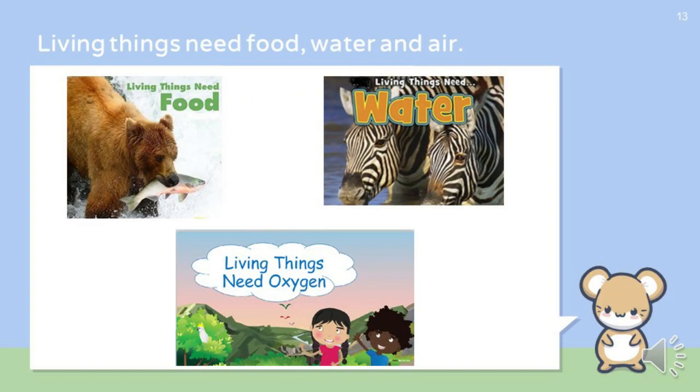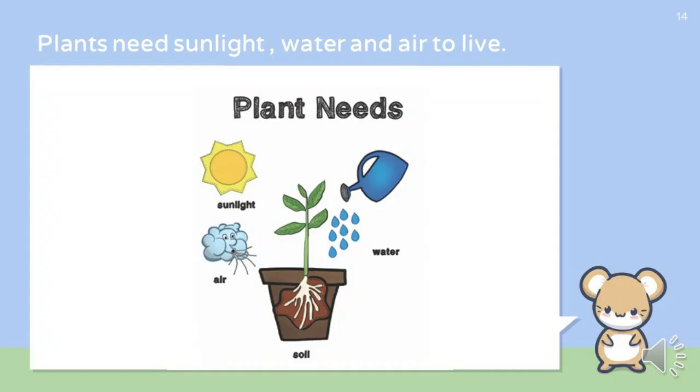The third characteristic is living things need food, water and air to live. Animals and humans need food to get energy. We cannot live without water. We need oxygen to breathe. Plants need sunlight, water and air to live. If a plant is kept in a dark room without sunlight and water, it is going to die.